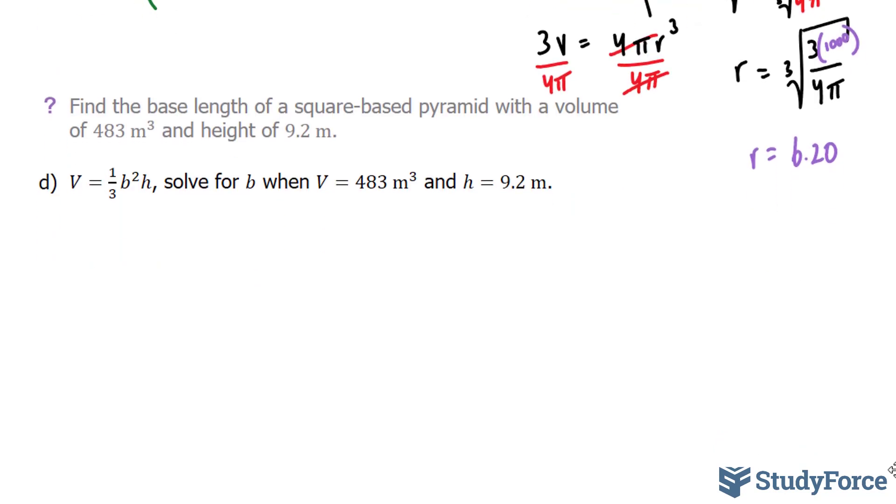Moving on to our last question. Find the base length of a square-based pyramid with a volume of 483 meters cubed and a height of 9.2 meters. This is the formula that represents the volume, and they want us to solve for this B. We're going to use the same technique as before. I'm going to rewrite this in a way that's more understandable.